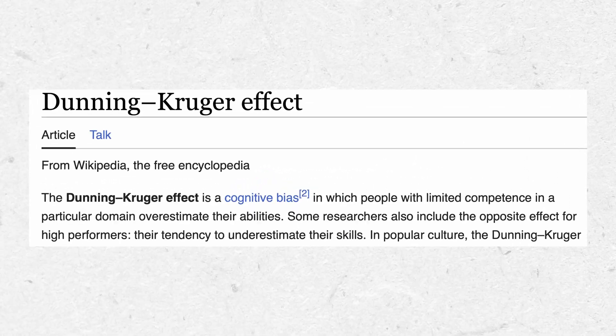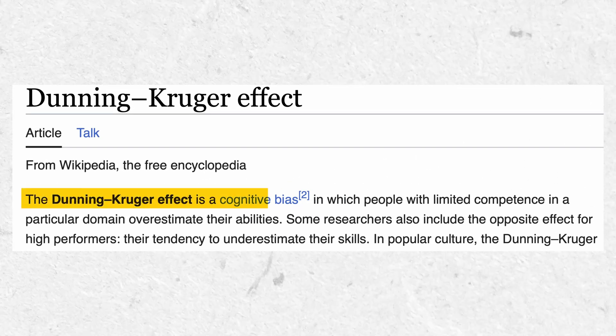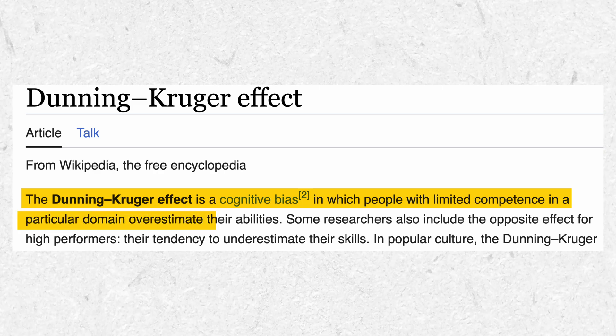There is a connection between cognitive ability and intuition thinking, and that's where the Dunning-Kruger effect comes in. Wikipedia defines it as a cognitive bias in which people with limited competence in a particular domain overestimate their abilities. For example, if your team gets a forecasting project and you've worked on some time series models in college with limited data and domain knowledge, you may apply them directly without understanding why you're building them.